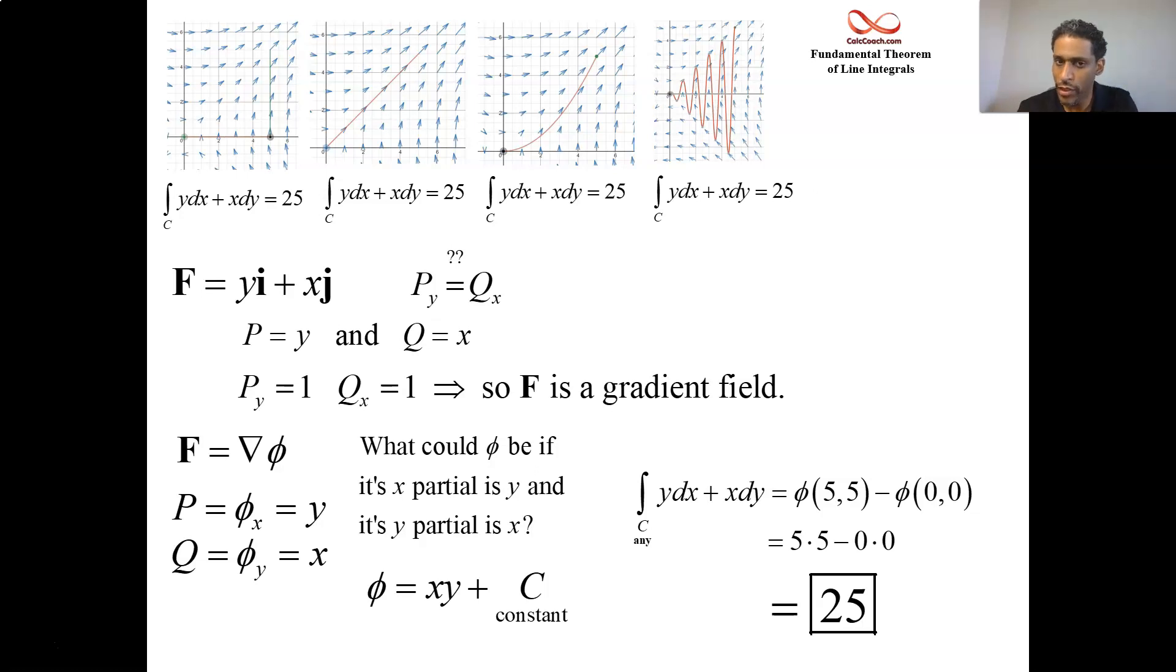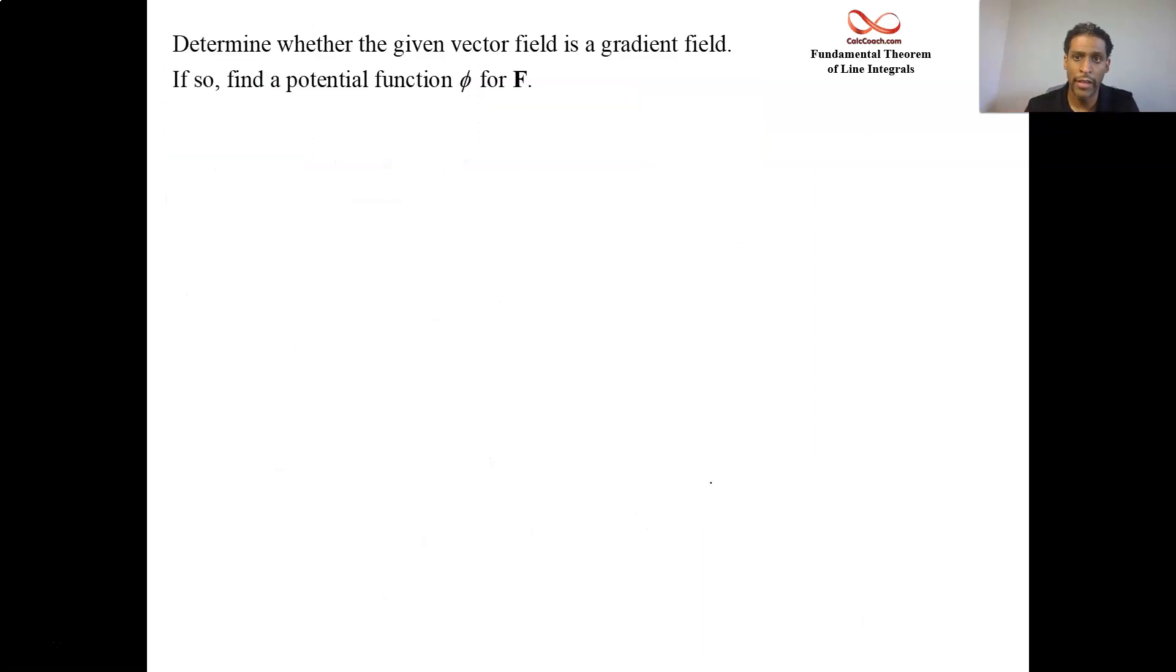So we want to be able to know how to find it if our intuition fails us. And so here's an example. I'm going to figure out what the potential function is, or if there is even one. In this particular two-dimensional setting, we have 2xy³ and the quantity of x² + 1 multiplied by 3y². That's our p, that's our q. For f to be a gradient field, we need p_y to be equal to q_x, and it is. You see, p_y is 6xy² and q_x is 6xy². F is a gradient field.